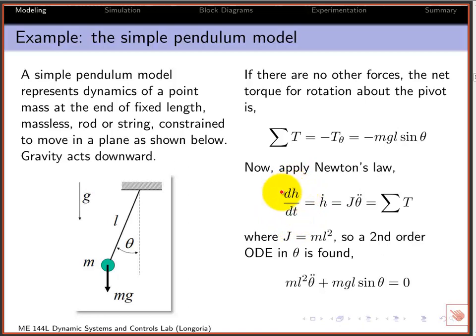We assume gravity acts downward, and we apply Newton's law about that axis of rotation. Newton's law for rotation says the rate of change of angular momentum, dh/dt or h dot, equals J theta double dot, since h equals J omega, which is theta dot. That equals the sum of the net torques about that point of rotation. In this first case, we assume the only torque acting, with no friction at the pivot and no resistance, is this gravitational restoring torque. It's the torque due to the mass that brings the pendulum to rest at the vertical. This torque is minus MgL sin theta, so for the simple pendulum, J is ML squared, giving us a simple nonlinear second-order ODE.